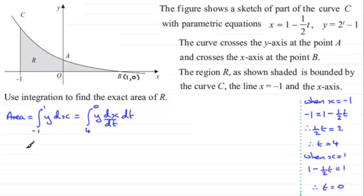Now what we need to do next is to substitute our value for y in. So we've got our integral going from four to zero, and our y value is now two to the power t minus one. So we've got two to the power t minus one. We multiply it by dx by dt, and if we differentiate x with respect to t, you're going to get just minus a half. So multiply that by minus a half, and we're integrating this with respect to t.